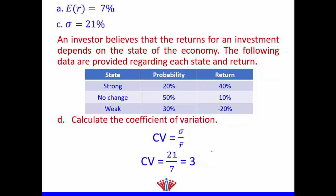We now have our expected return and volatility calculated. The next part is to calculate the coefficient of variation. The formula is risk divided by return — that is, volatility divided by expected return. We have a risk of 21 divided by an average return of 7. Do not use percentages when calculating coefficient of variation or Sharpe ratio. So 21 divided by 7 gives us 3.